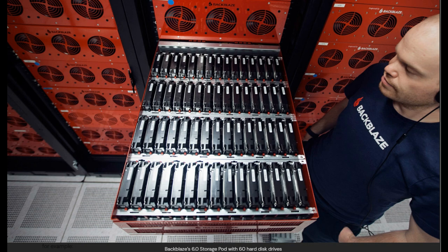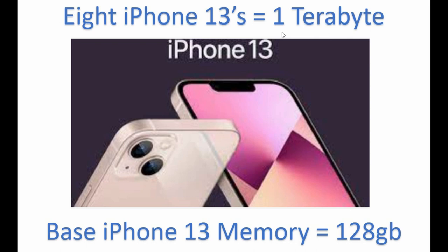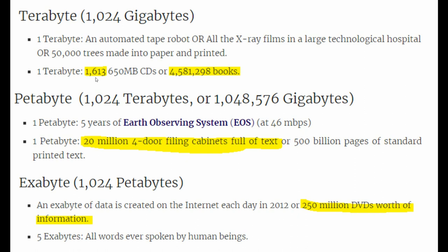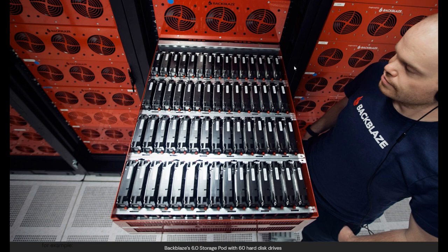But today, hard drive technology has evolved greatly, and now we have storage in petabytes and exabytes. Let's get a sense of scale. Starting with one terabyte: it takes eight iPhone 13s to equal one terabyte, since the base memory is 128 gigabytes. One terabyte is 1,613 old CD-ROMs or 4.6 million books. One petabyte is 20 million four-door filing cabinets full of text. And one exabyte — the UMO titanium cube — will hold 250 million DVDs.